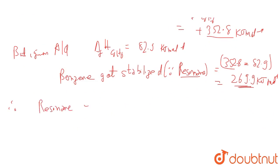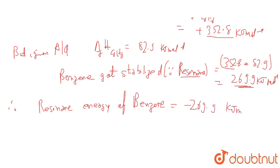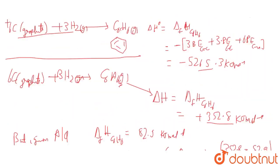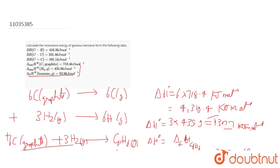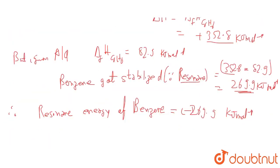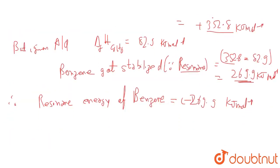The resonance energy of benzene equals −269.9 kJ/mol, because heat is released due to the resonance of benzene — that is why we consider a negative sign. This is the final solution: the resonance energy of benzene is −269.9 kJ/mol.